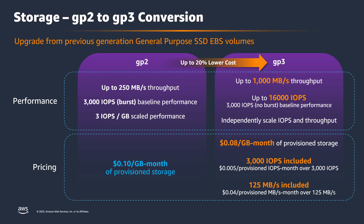Amazon EBS enables you to modify your volume type from GP2 to GP3 without detaching volumes or restarting instances, which means that there are no interruptions to your applications during modification. In this demo, we will show you how to migrate your EBS volume from GP2 to GP3.